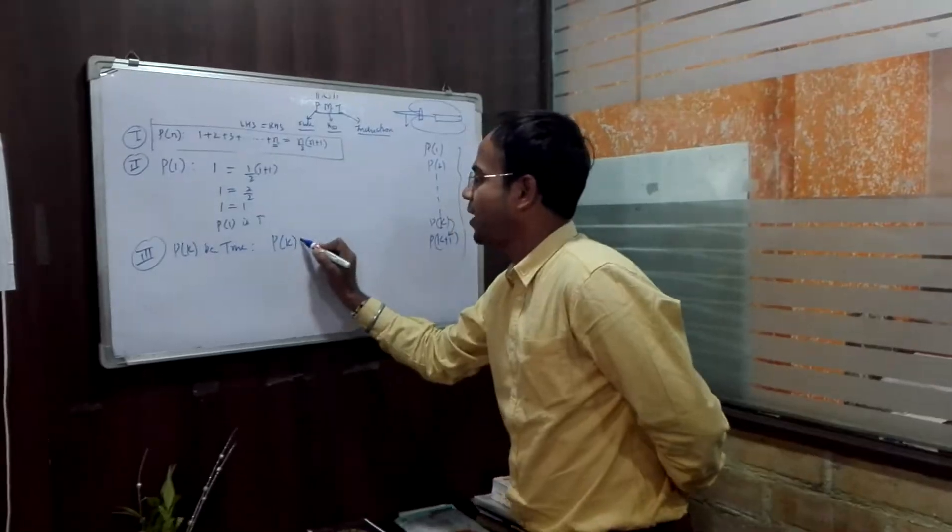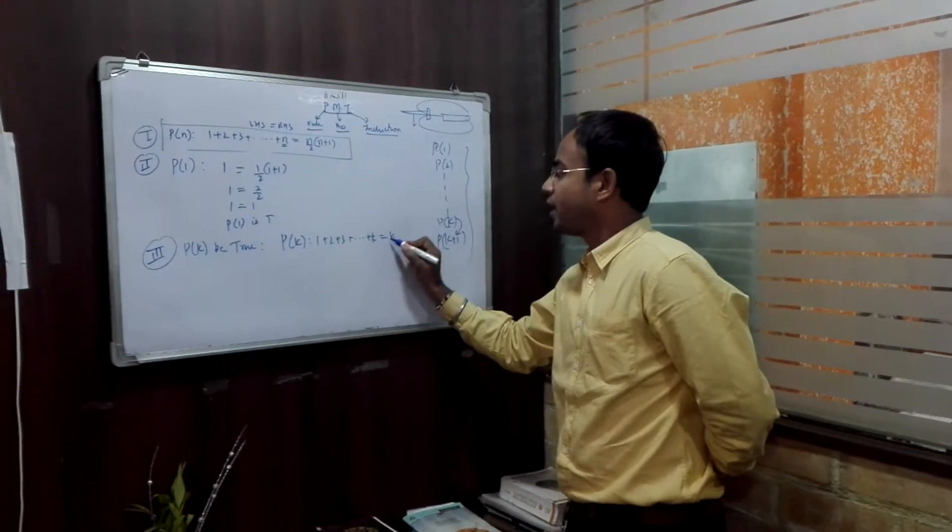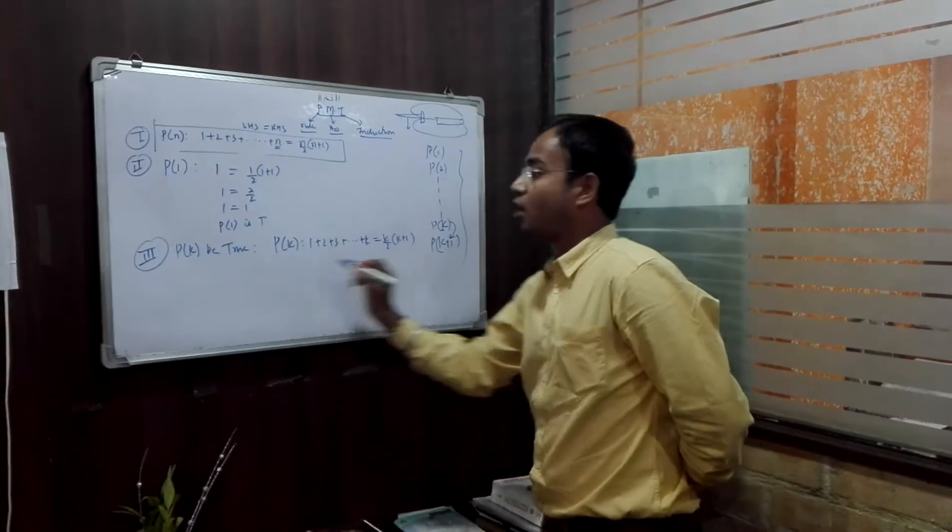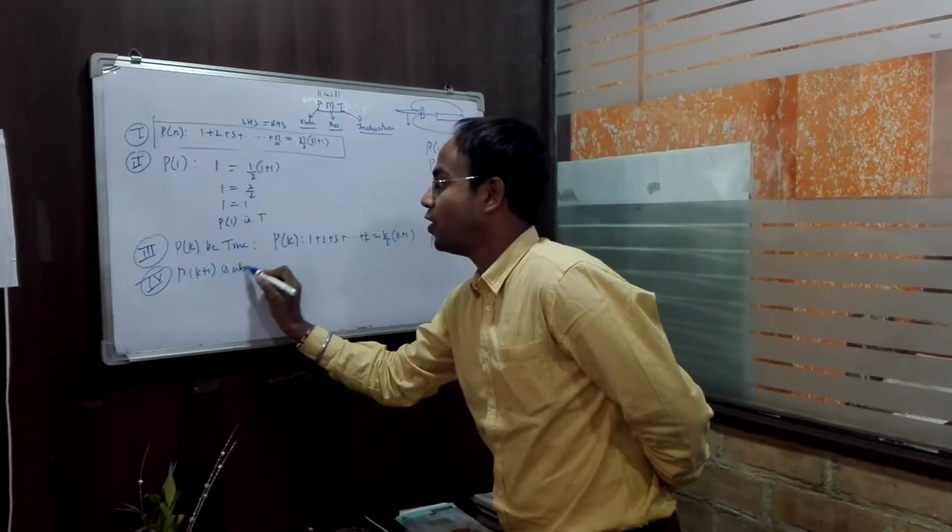What should be P(K)? P(K) is nothing but 1 plus 2 plus 3 plus dot dot dot K, which has to be nothing but what? K by 2 into K plus 1. Now to prove, fourth and last step, that P(K+1) is also what? True.